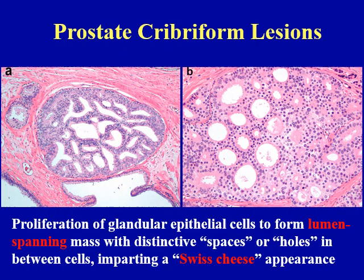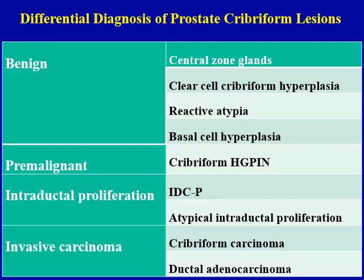Prostate cribriform lesions are those glands that show proliferation of glandular epithelial cells to form lumen-spanning masses with distinctive spaces or holes in between cells, imparting a Swiss cheese appearance. They can be seen in a wide range of prostate lesions, including benign lesions such as central zone glands, clear cell cribriform hyperplasia, reactive atypia, and basal cell hyperplasia; pre-malignant lesions such as cribriform high-grade PIN; intraductal proliferations such as intraductal carcinoma and atypical intraductal proliferation; and invasive carcinoma such as cribriform carcinoma and ductal adenocarcinoma.